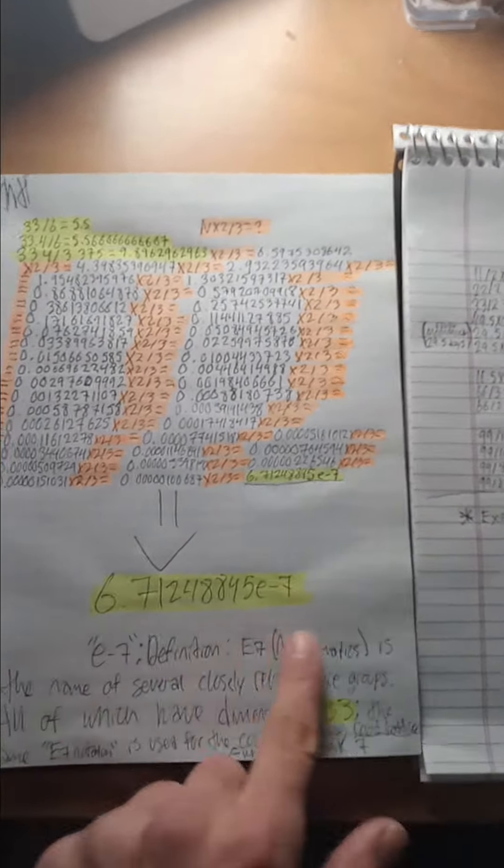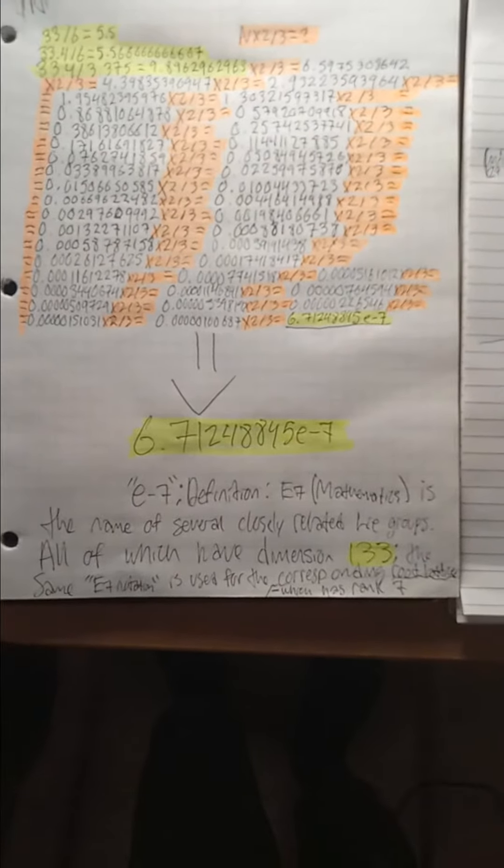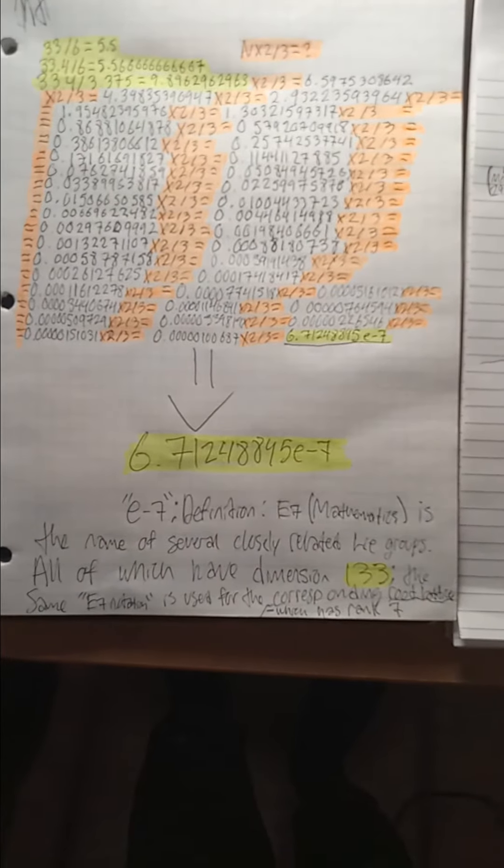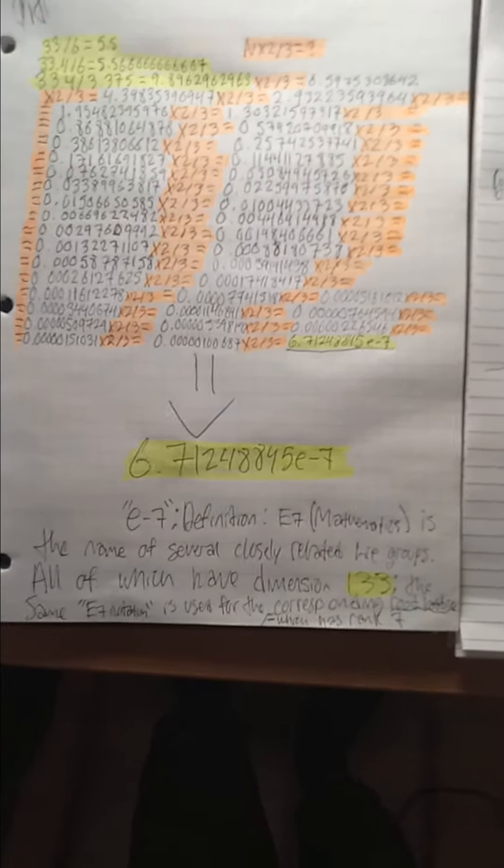With e7, what the fuck does e7 mean? Well here you have it folks, e7 definition is the name of several closely related Lie groups all of which have dimension 133. The same e7 notion is used for the corresponding root lattice which has rank 7.